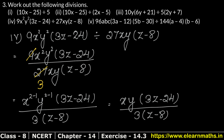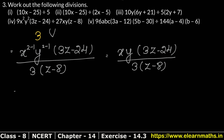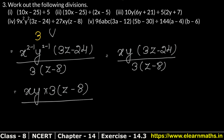Looking at 3z minus 24, both 3 and 24 are in the 3 times table, so we take 3 common: 3(z minus 8). This gives xy times 3(z minus 8) upon 3(z minus 8). The 3 and the bracket (z minus 8) both cancel, leaving xy as the answer.